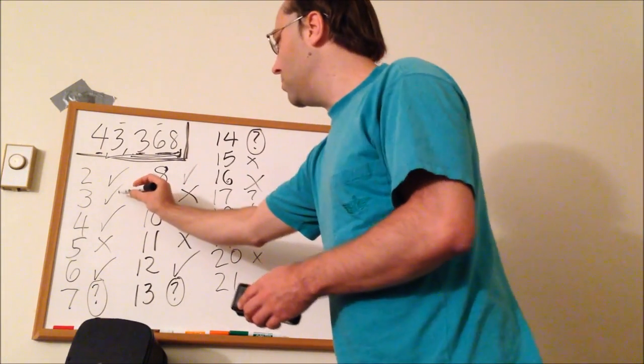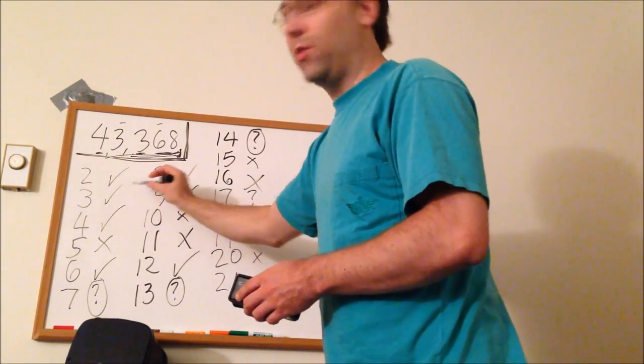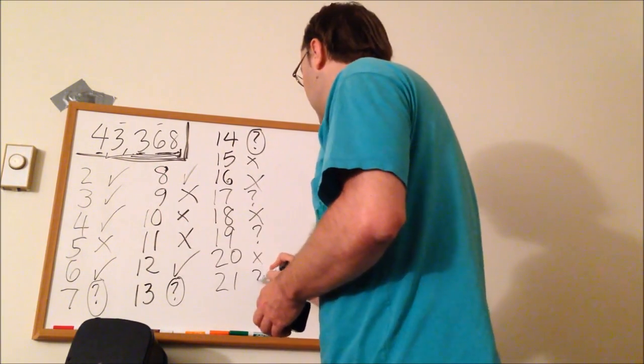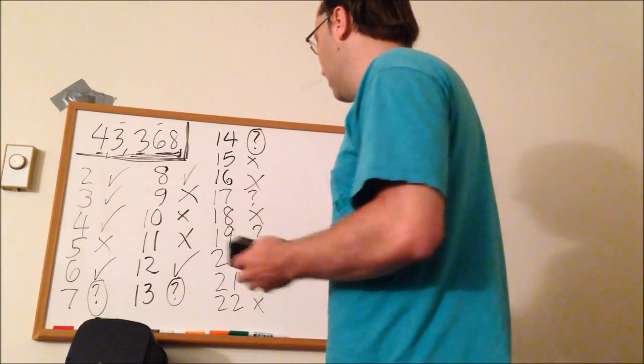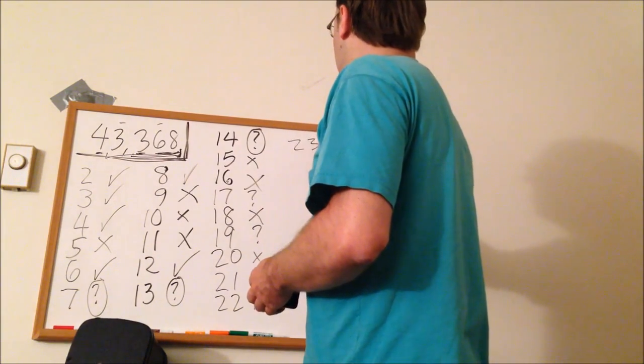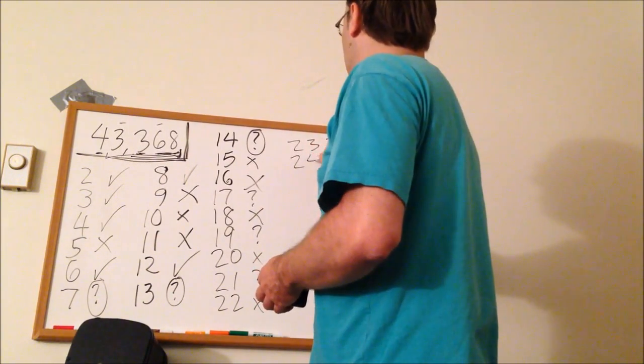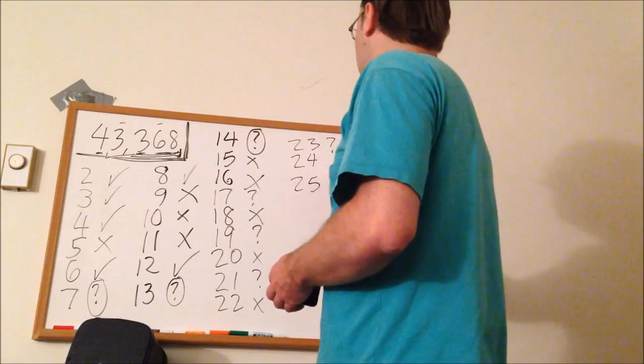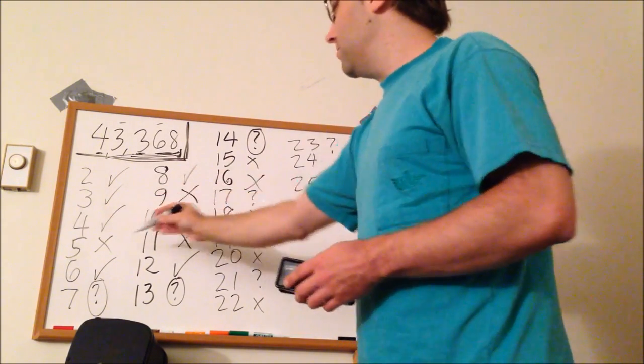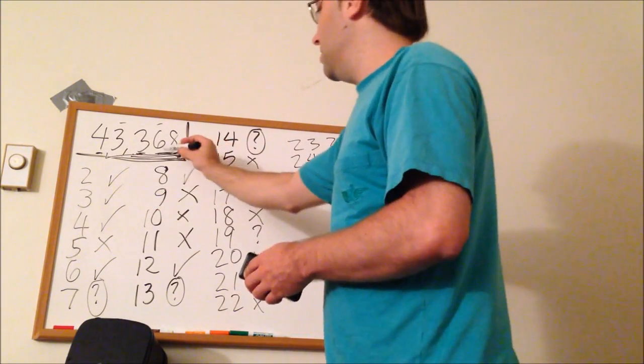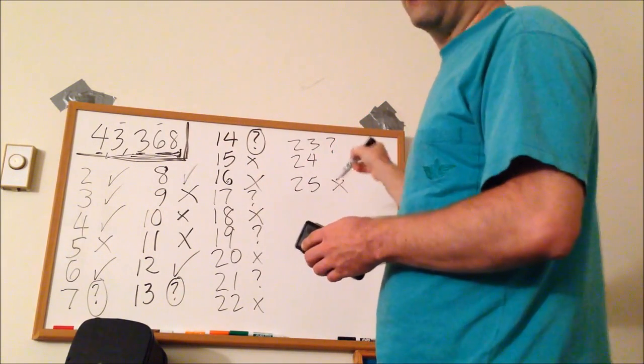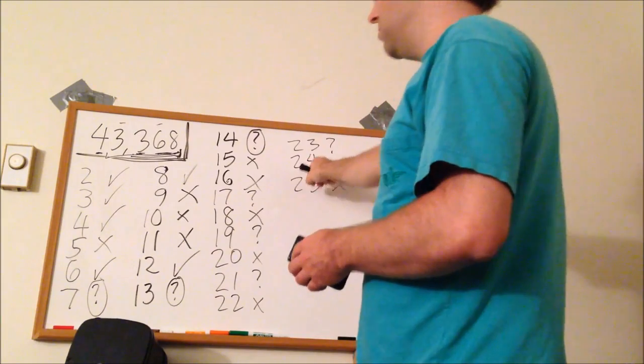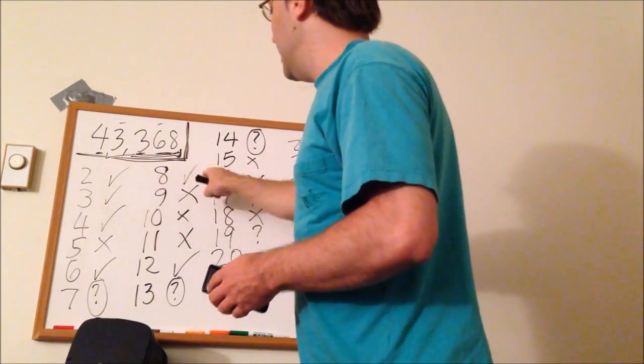21, we're not sure, because 3 passes. It's divisible by 3, but we don't know if it's divisible by 7 yet. 22 is a no, because 11 fails. 2 and 11 would imply 22. 23, we're not sure. And 25 is obviously a fail, because 5 doesn't work. It would have to end in 25, 50, or 75, or 00.